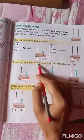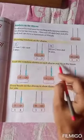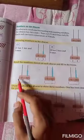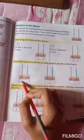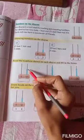Read the numbers shown on each abacus and fill in the boxes. You have to write it. You have to count the beads and you have to write the numbers. Just count along with me.